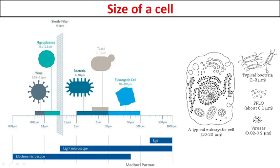If you remember 1 or 2 microns for a bacterial cell, dividing by 10 gives you 0.1 micron — that is how big the PPLO or mycoplasma is. The smallest living cell is 0.1 micrometer. PPLO is actually a little smaller than some viruses — if a virus is 0.2 microns big, then some PPLO which are 0.1 microns are smaller than virus. Viruses can be 0.02 to 0.2 microns in size, according to your textbook.